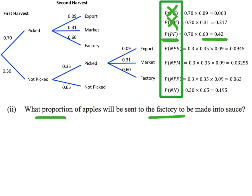Let's look at the next one. NPE: not picked the first harvest, picked the second harvest and sent to export, that does not refer to the factory. The next one, NPM, not picked, picked, sent to market, that's not talking about the factory either. The next one, NPF, not picked the first harvest, picked the second harvest and then going to the factory. This is another one I am interested in because that meets the criteria of going to the factory. And last but not least, NN, not picked the first time and not picked the second harvest, so that doesn't meet the criteria of going to the factory.